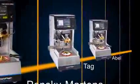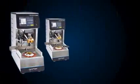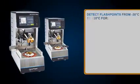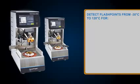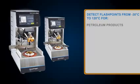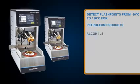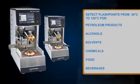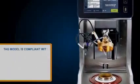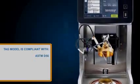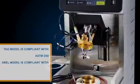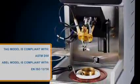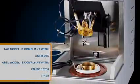The OptiFlash TAG and OptiFlash ABEL models accurately detect flashpoints from minus 30 to 120 degrees Celsius for petroleum products, alcohols, solvents, chemicals, food and beverages. The TAG model is fully compliant with ASTM D56. The ABEL model is fully compliant with ENISO 13736 and IP-170.